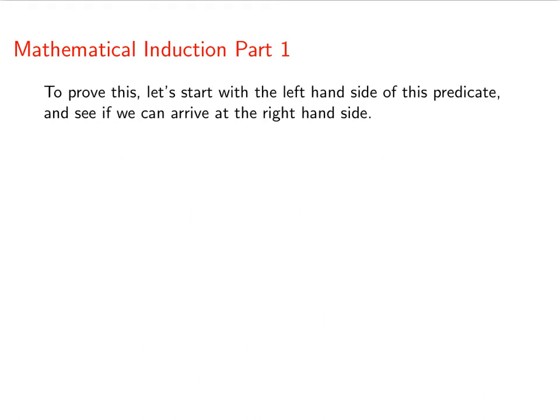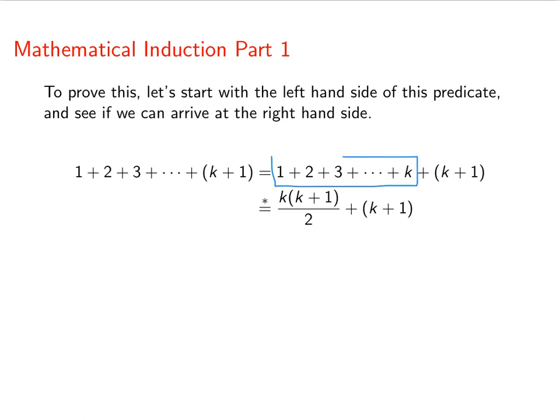Now in order to prove this, let's start with the left-hand side of this predicate and see if we can arrive at the right-hand side. Okay, so if we take the sum of the first k plus 1 integers, we're going to rewrite it just so that we can actually see the k that's in here. This is the second to last term. Now we can take all of this, the sum going up to k, and rewrite that as k times k plus 1 over 2.